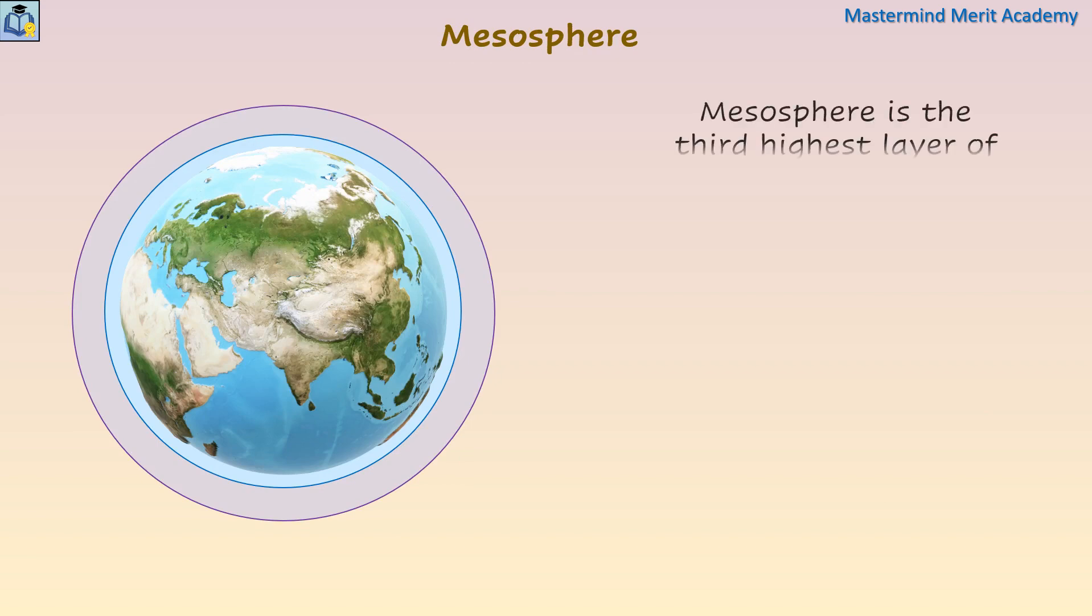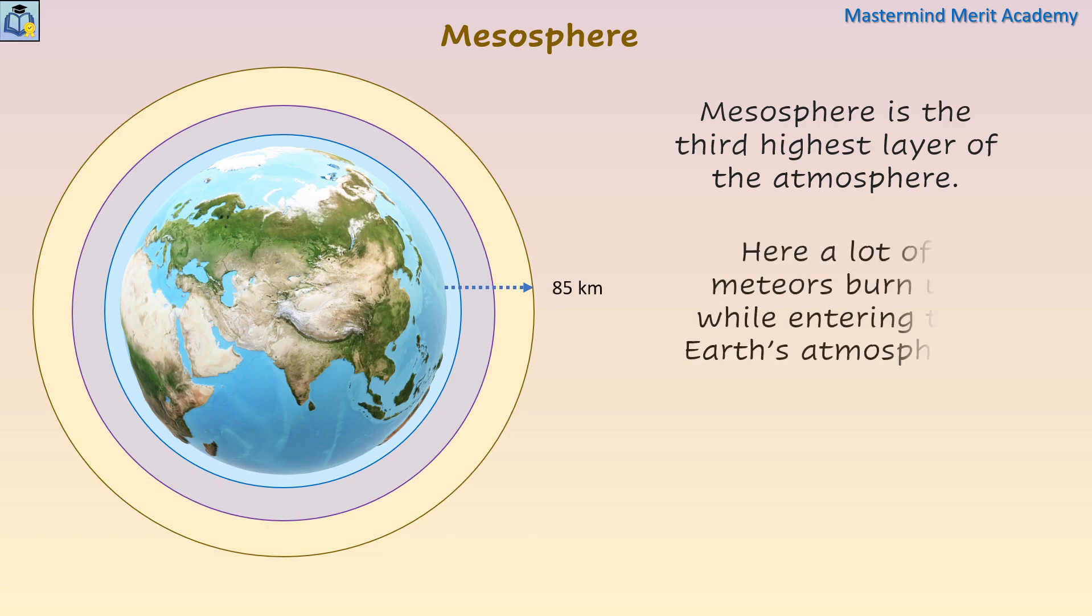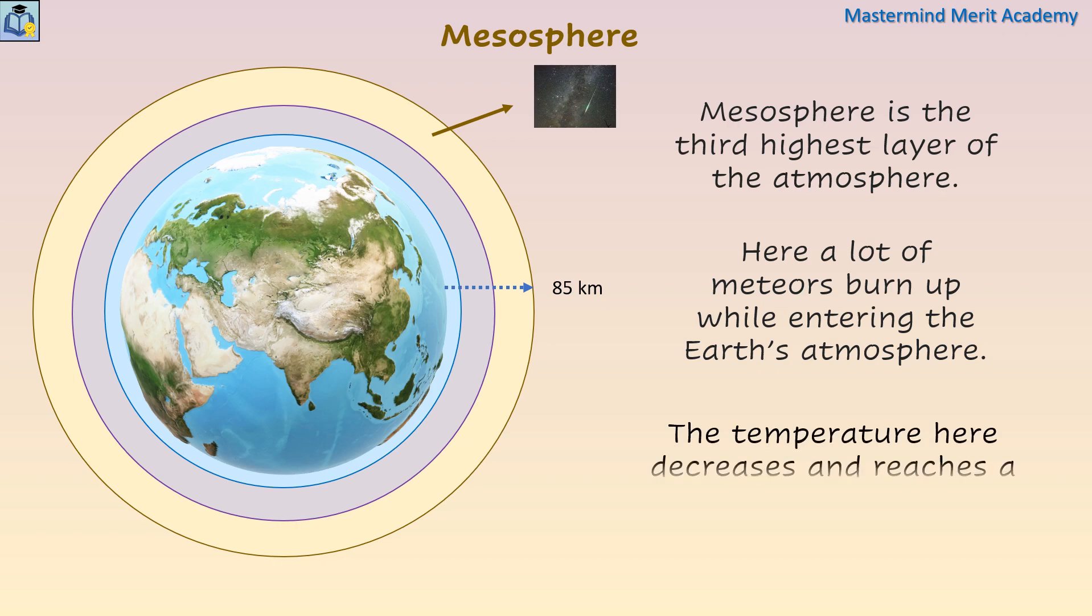It extends upward to a height of 85 kilometers above our Earth. Here, a lot of meteors burn up while entering the Earth's atmosphere. The temperature here decreases and reaches a minimum of about negative 90 degrees Celsius.